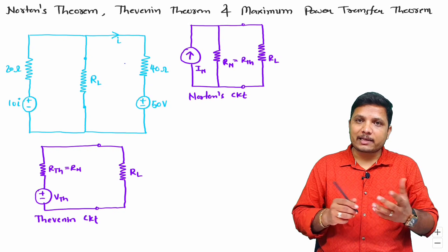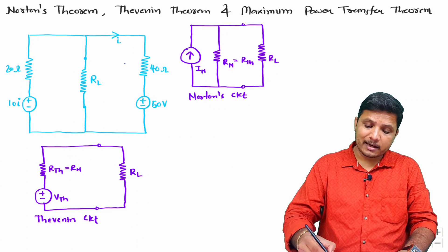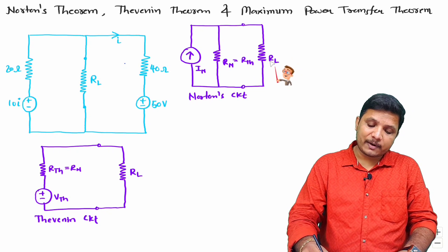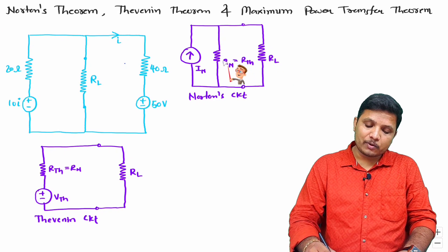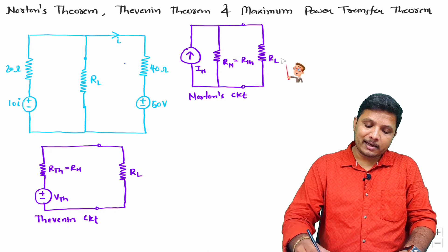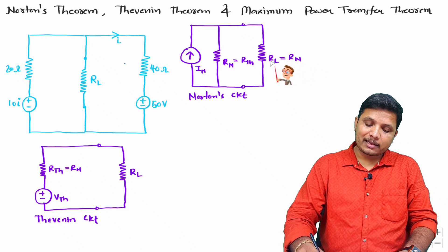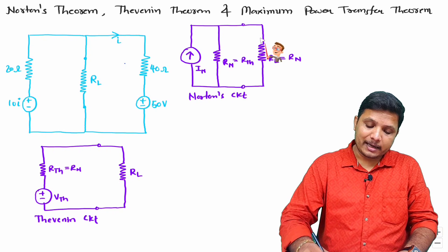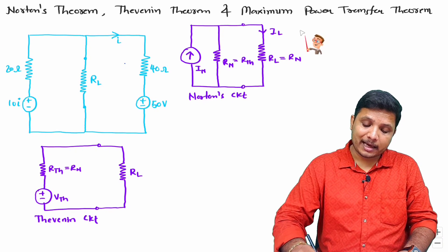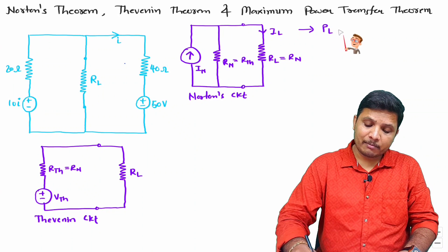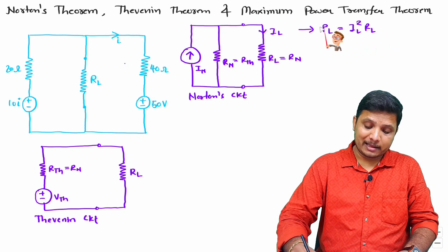For maximum power transfer to the load in Norton's circuit, this will happen only if R_L equals the equivalent resistance R_n. So if R_L equals R_n, maximum power transfer occurs, and the maximum power transferred to the load is I_L squared times R_L.